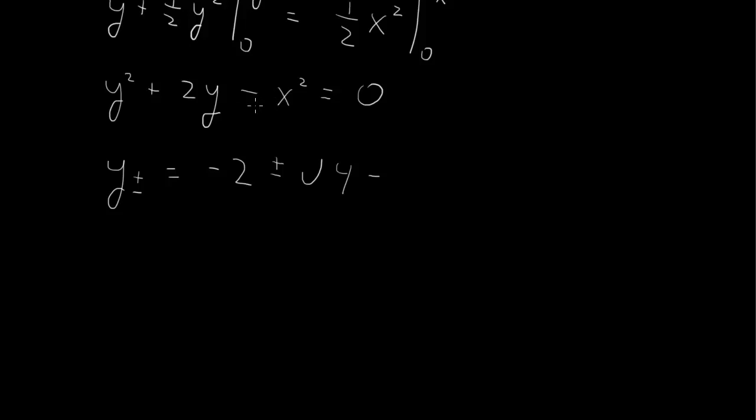minus 4ac. Here c = -x², so we have -4(1)(-x²) = +4x². All divided by 2a, which is 2. We can factor out the 4, take the square root to get 2, so we have -1 ± (the 2 cancels) √(1 + x²).